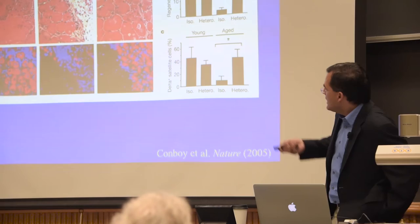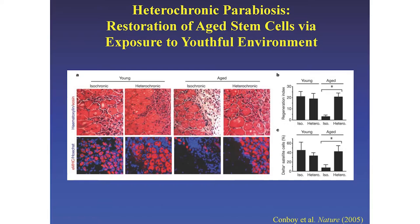She was studying muscle, and across the body — not just in the brain — the function of stem cells begins to decline with aging. She found that within aged animals, the ability of muscle to regenerate decreases. But if you connect the aged animal to the circulation of a young animal, it completely rescues the function of the muscle stem cells — all of a sudden the old animal is behaving like a young animal.